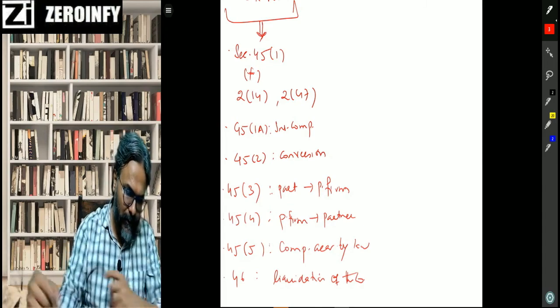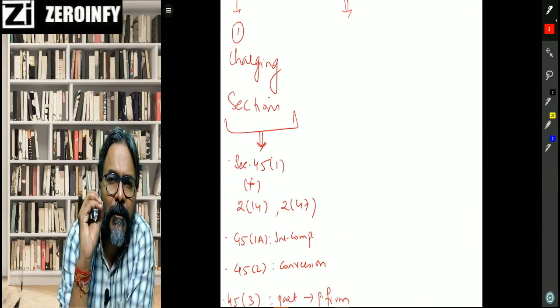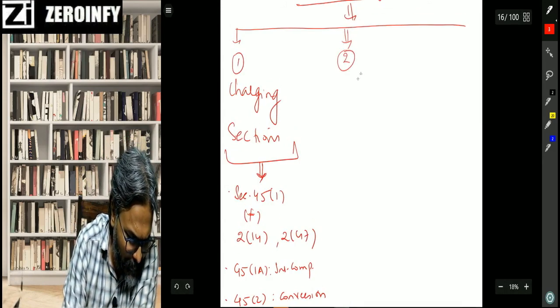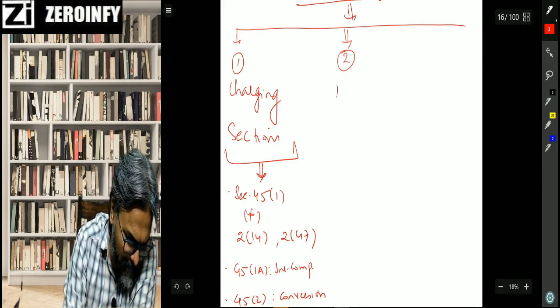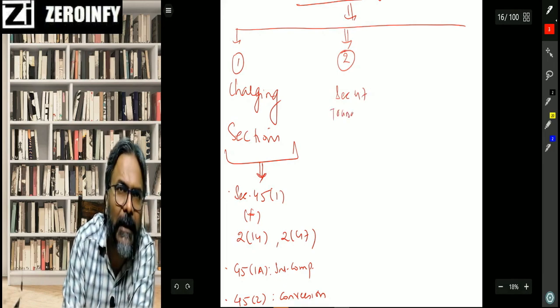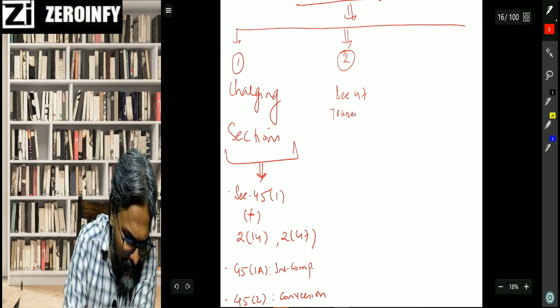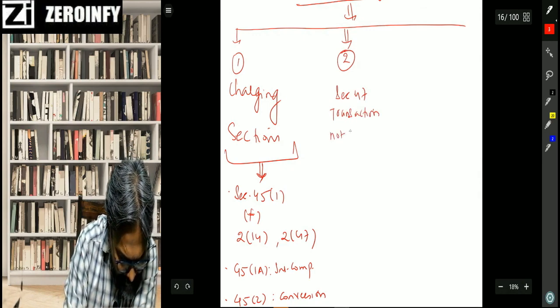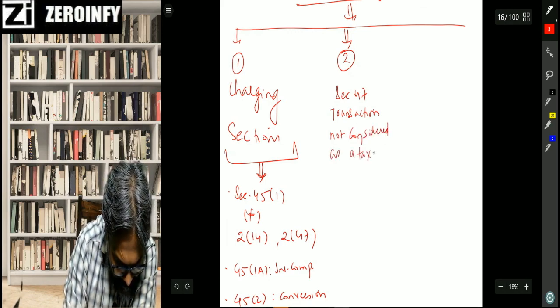Fine, so now this was the first part of your revision students, based on our inputs in our yesterday's class. The input which I have already set you up in yesterday's class, please follow them religiously. The second particular part friends that you will also look into, it would be about the section 47, section 47 which is about the transaction not considered as a taxable transfer. Now we will make the list also. What are the things that we have discussed? So transaction not considered as a taxable transfer.